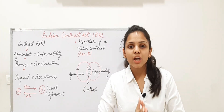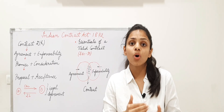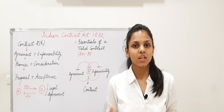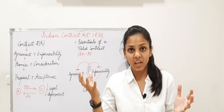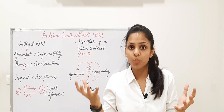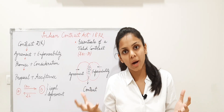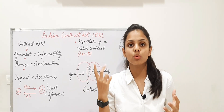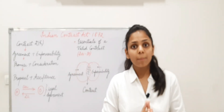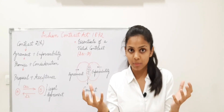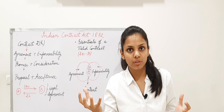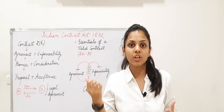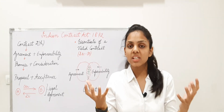Now, what is a contract and how does it come into existence? Suppose there are two people, A and B. A makes a proposal: 'I wish to sell my car for rupees two lakhs — will you buy my car?' B accepts the proposal and says, 'Yes, I am willing to buy your car for rupees two lakhs.' In Indian law, we use the word 'proposal' rather than 'offer' (which is used in English law). A is the proposer — the person who makes the proposal — and B is the promisee, to whom the proposal is made.